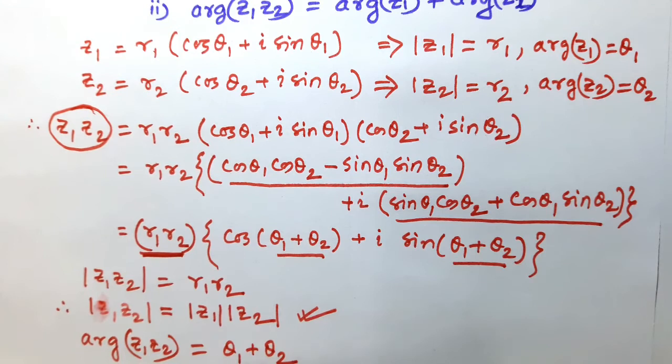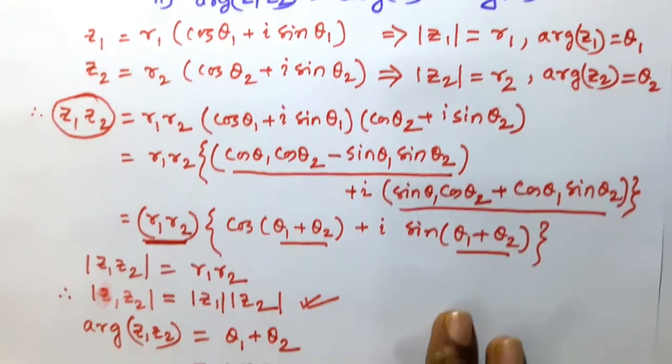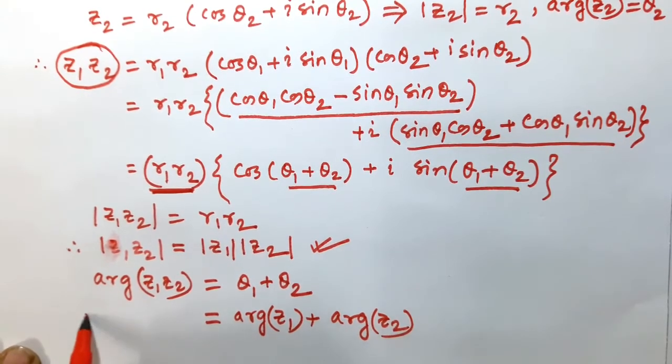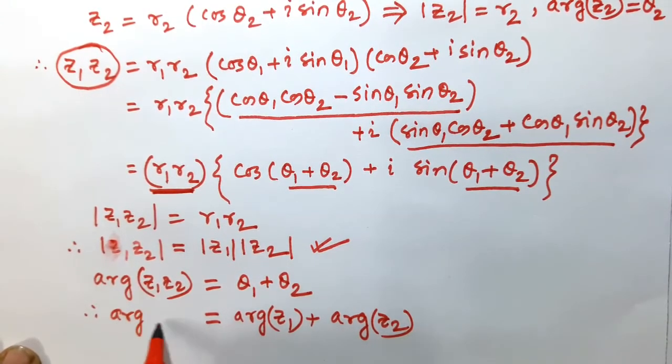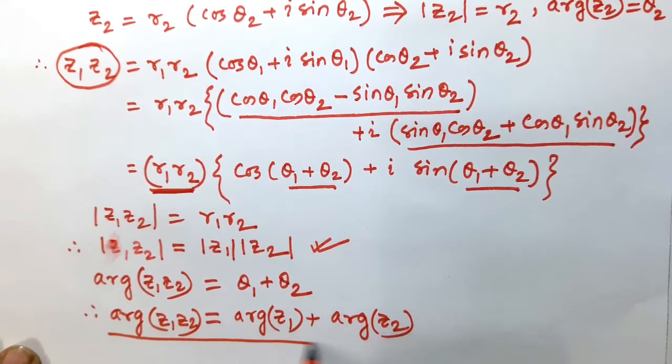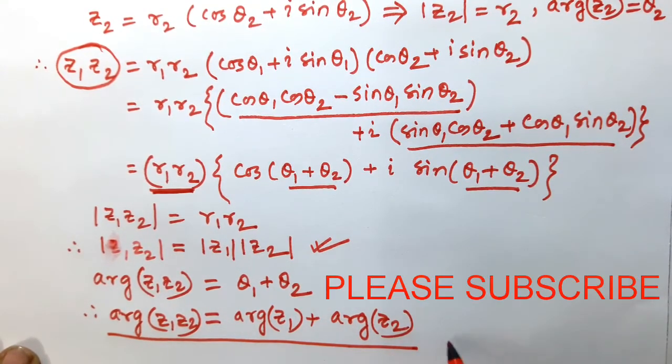So that this θ1 is replaced by arg of Z1, and this θ2 will be replaced by arg of Z2. So that arg Z1 Z2 is equal to arg Z1 plus arg of Z2.